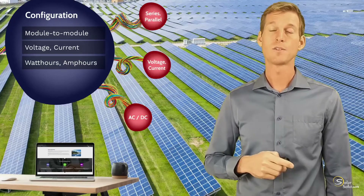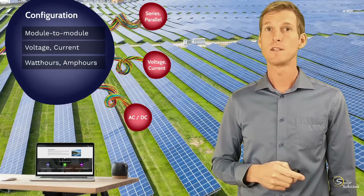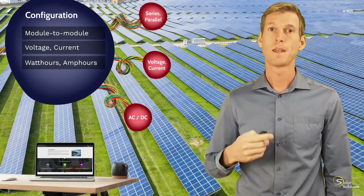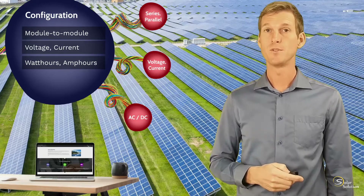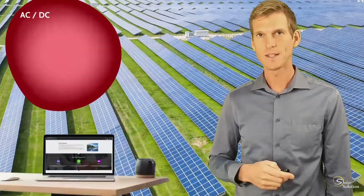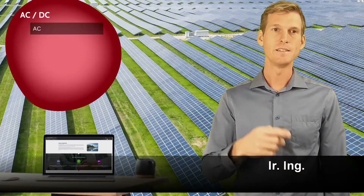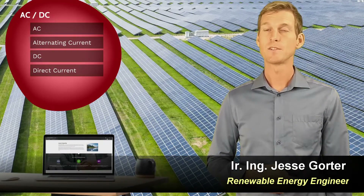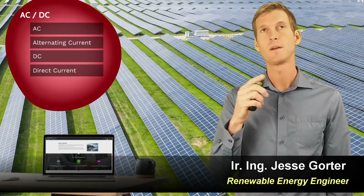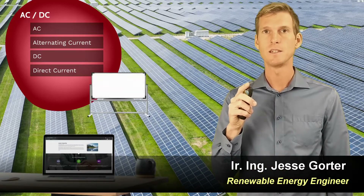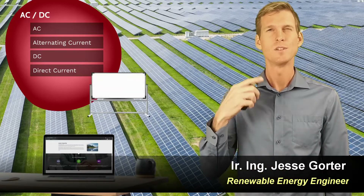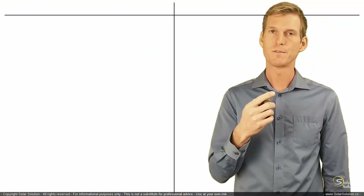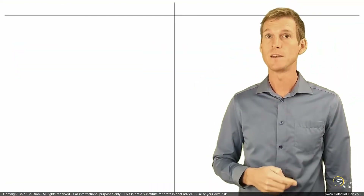Let's briefly look at alternating current versus direct current — what they actually are, what the differences are, and how they are being produced. AC stands for alternating current and DC stands for direct current. Let's go to the whiteboard and do a side-by-side comparison between AC and DC in a visual way.